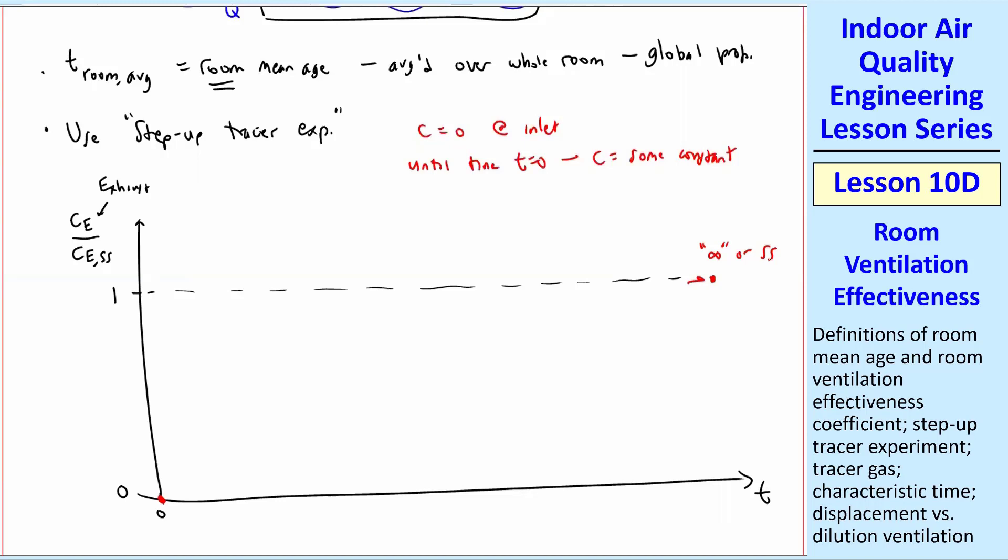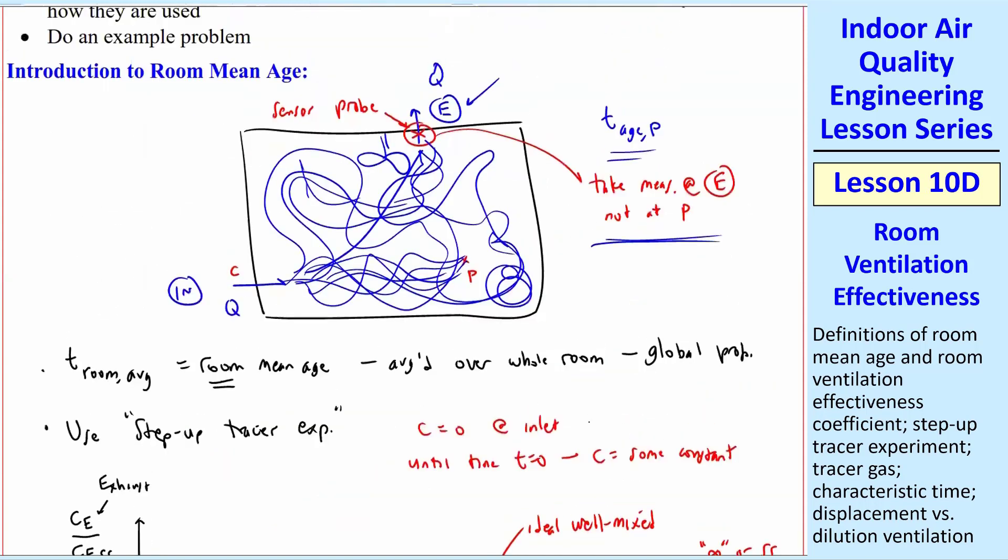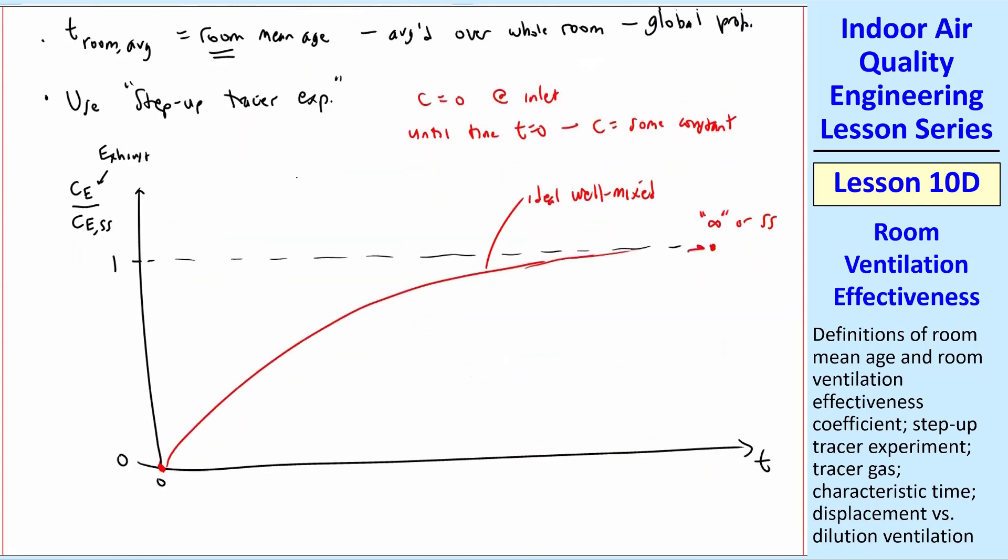We're going to get to C E equals C E steady state eventually. It may take longer for some rooms than others. If you do this with a perfectly well-mixed room, you would get our standard first-order ODE solution, but in real life, you may get something quite different. In a real room, you start injecting this contaminant at time T equals zero, and you're not going to sense it for a while. It's not perfectly well-mixed. It'll take some time, so normally the curve doesn't look like that, but it starts out at zero, and then it'll start slowly increasing, and it might have some wiggles in it and stuff, but eventually it's going to get to C E.